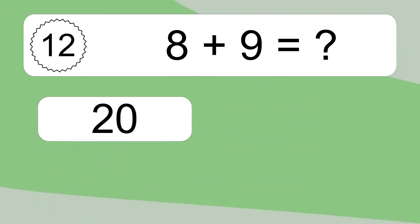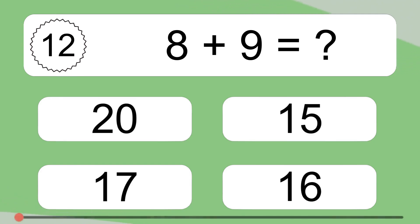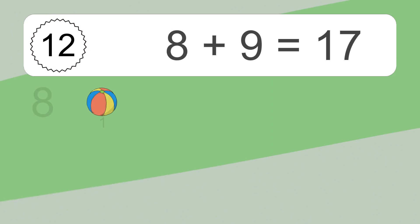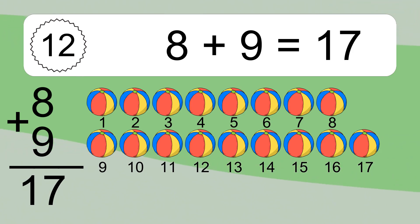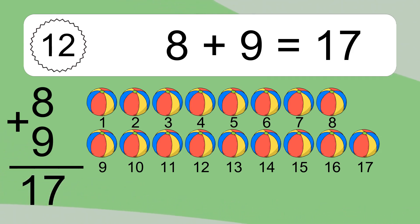8 plus 9 equals what? 8 plus 9 equals 17. Let's count it. 1, 2, 3, 4, 5, 6, 7, 8, 9, 10, 11, 12, 13, 14, 15, 16, 17.